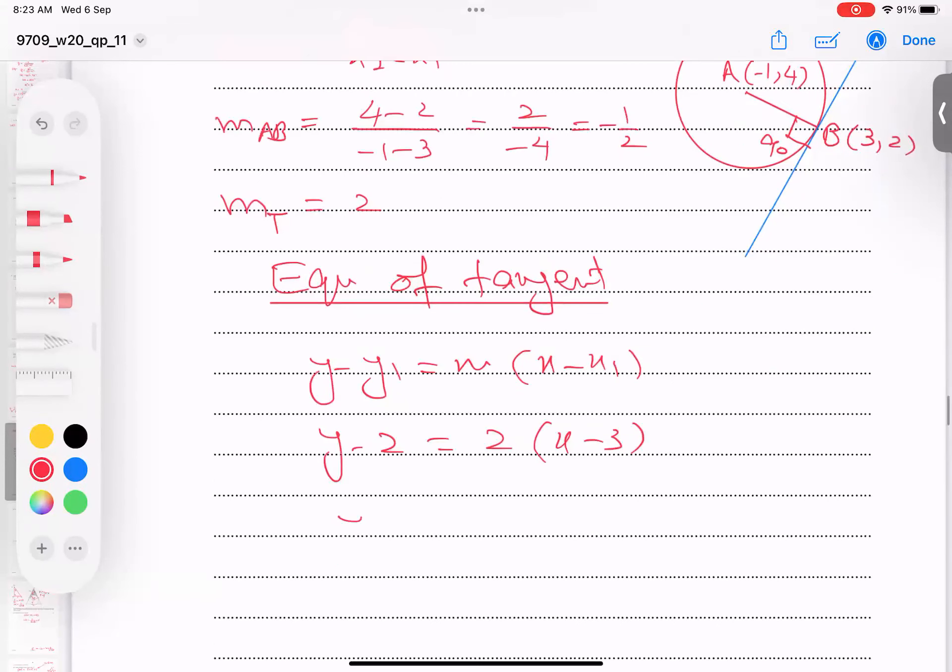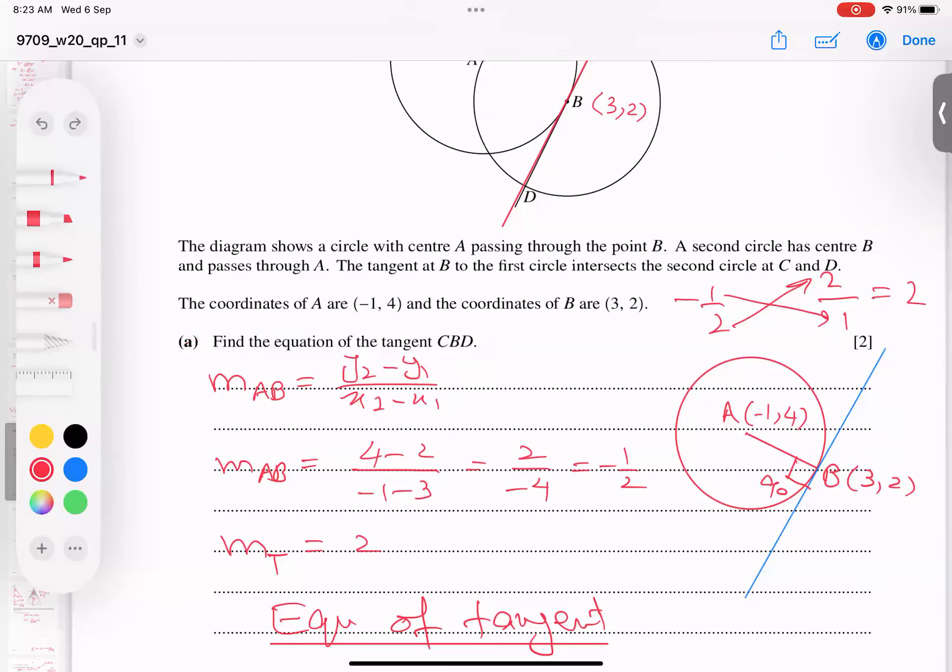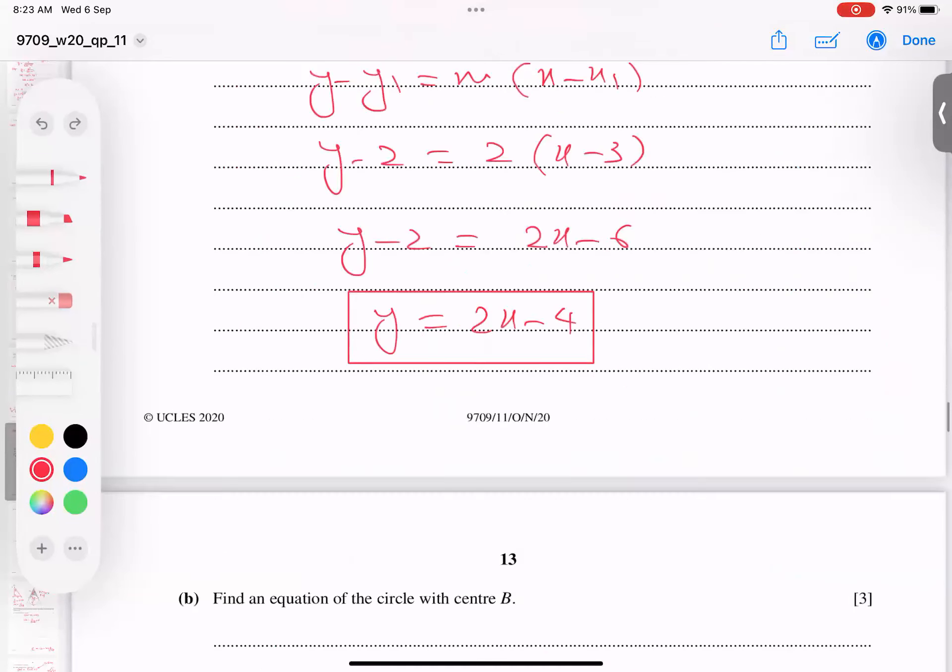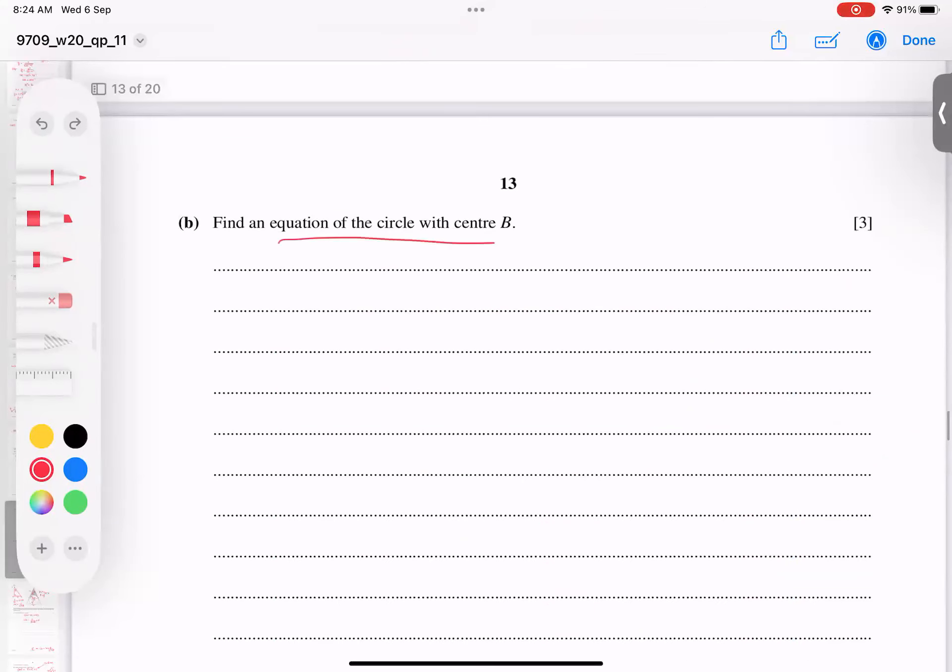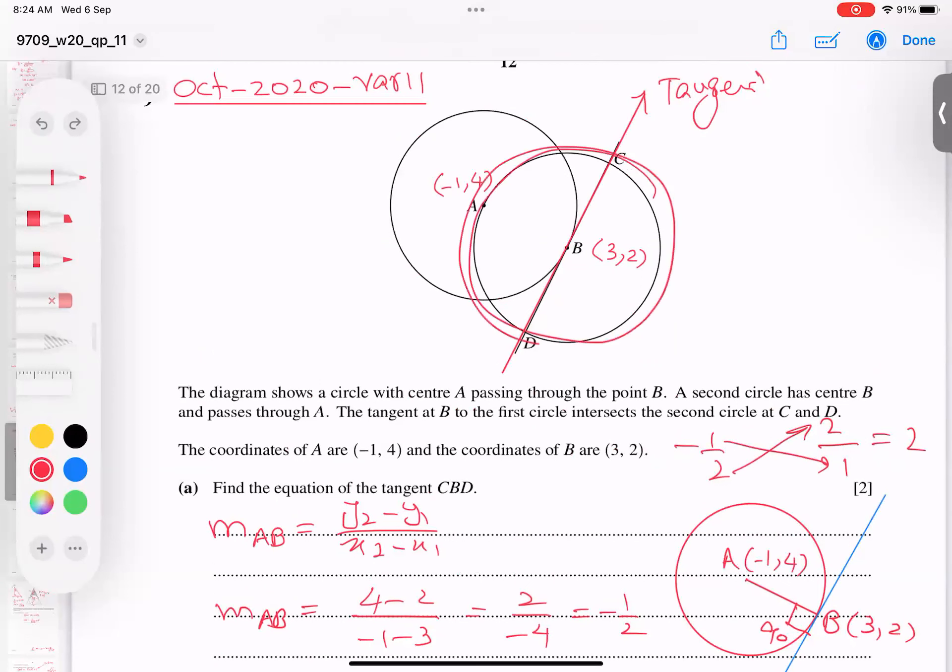Right, Y minus 2, 2X minus 6. These 2 will go on the other end. So Y equals to 2X minus 4. And this is equation of a tangent, what he is asking for. So we have done it. Let's go for next point. Next point is equation of circle with center B. Center B means this circle, right.